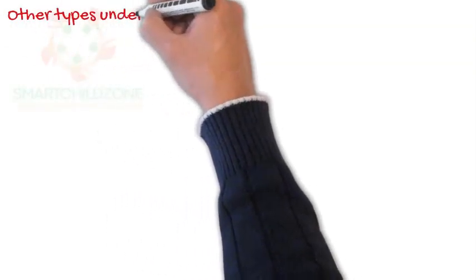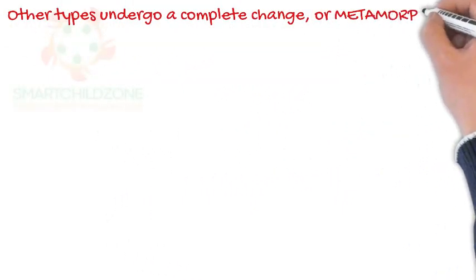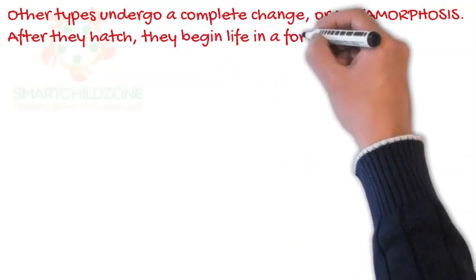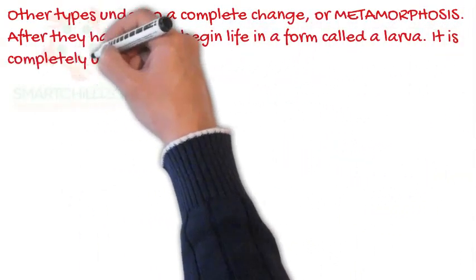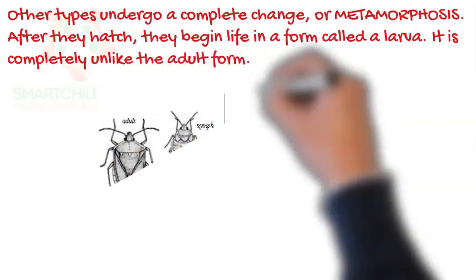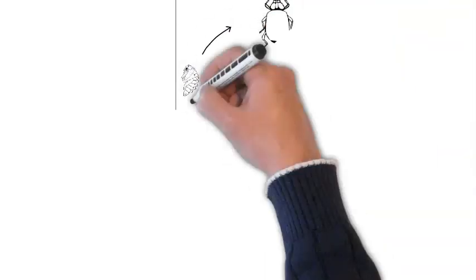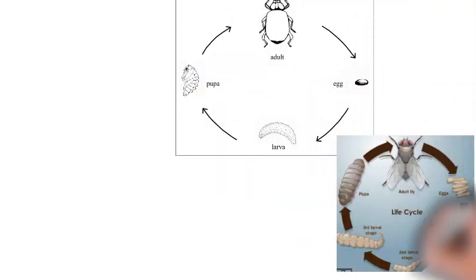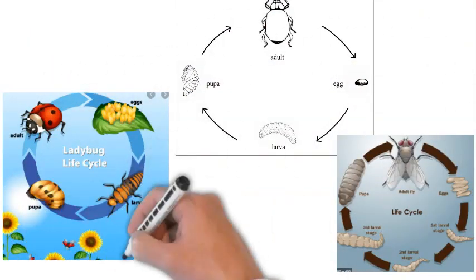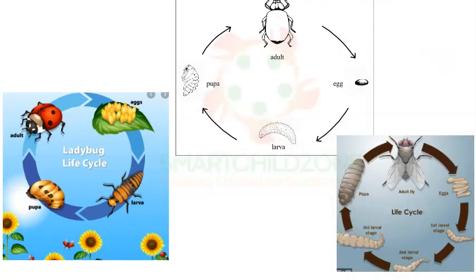Other types undergo a complete change, or metamorphosis. After they hatch, they begin life in a form called a larva, which is completely unlike the adult form. The larva may look more like a worm than an insect. The larva eats a great deal and molts several times. It then enters a resting stage in a form called a pupa. The pupa's body changes greatly during this stage, developing all of the features of the adult, including wings and legs. When this stage is complete, the adult emerges from the pupa.